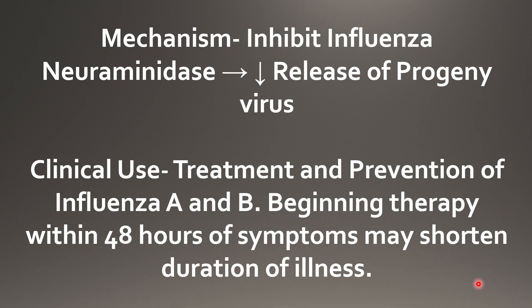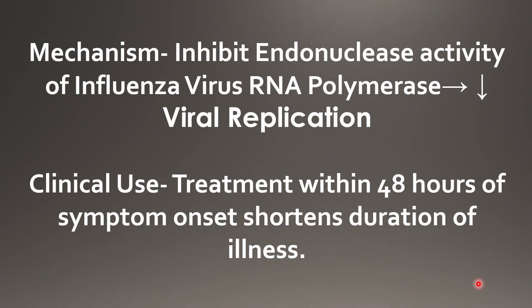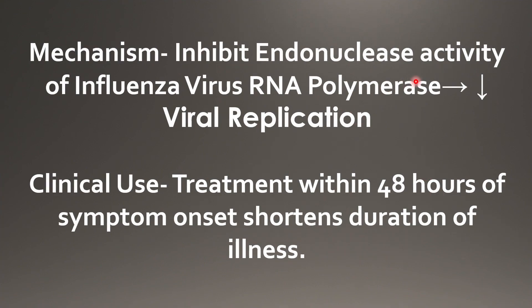Moving on to our next card — baloxavir. It inhibits the endonuclease activity of influenza virus RNA polymerase, hence decreasing viral replication. Its use is to shorten the duration of illness when given within 48 hours of symptom onset.